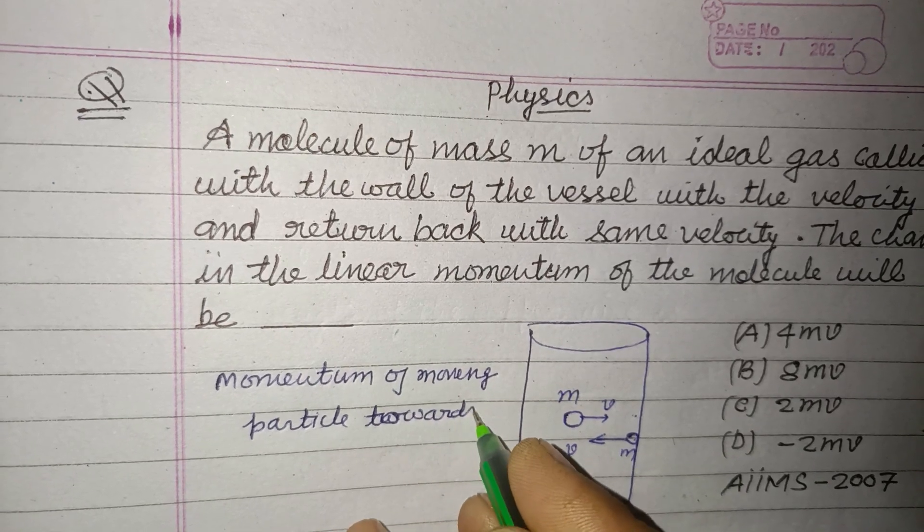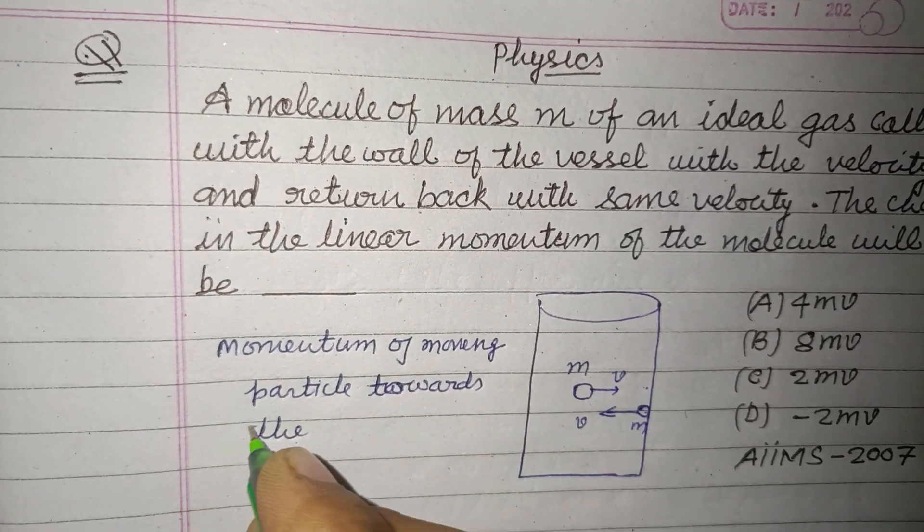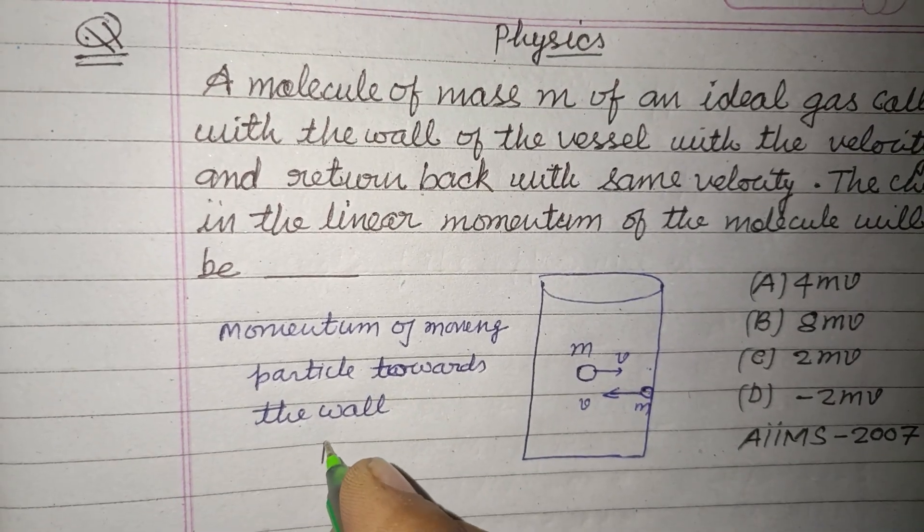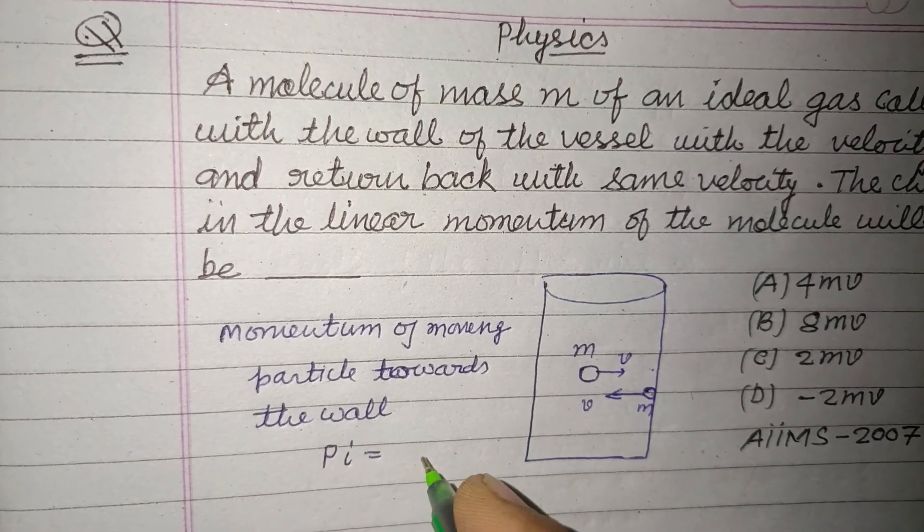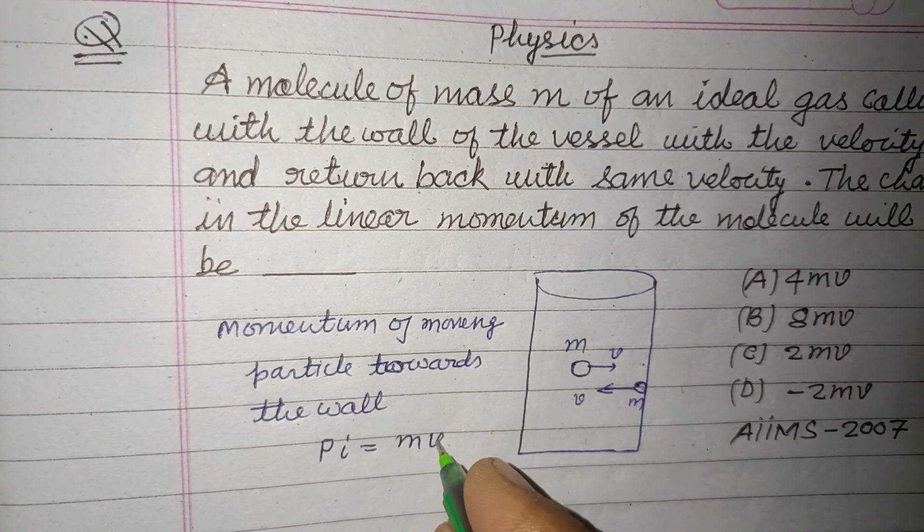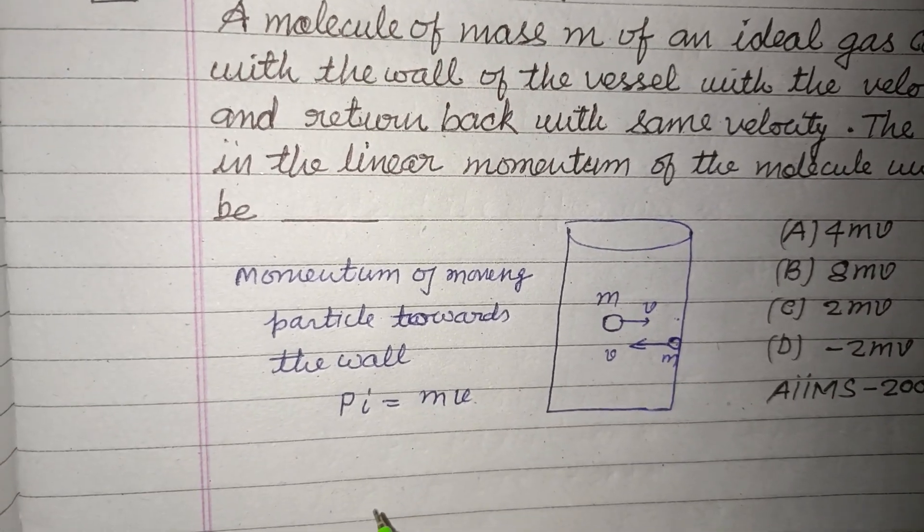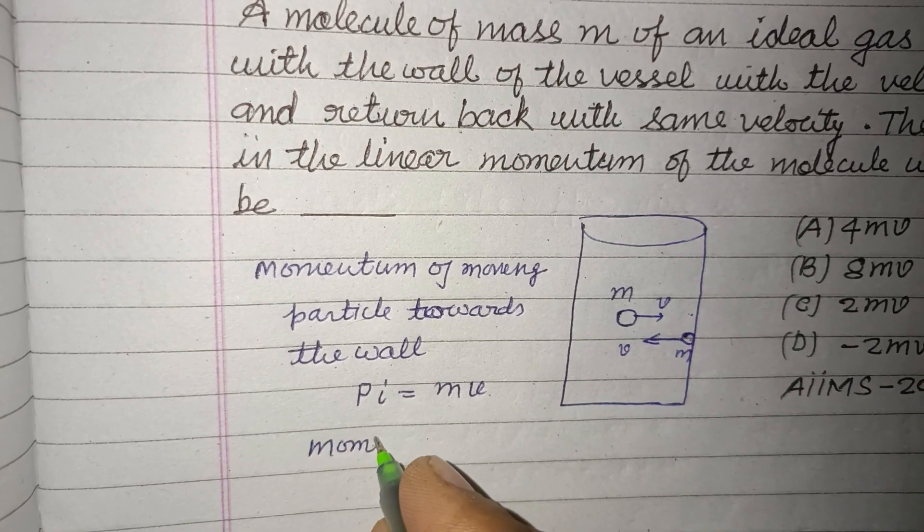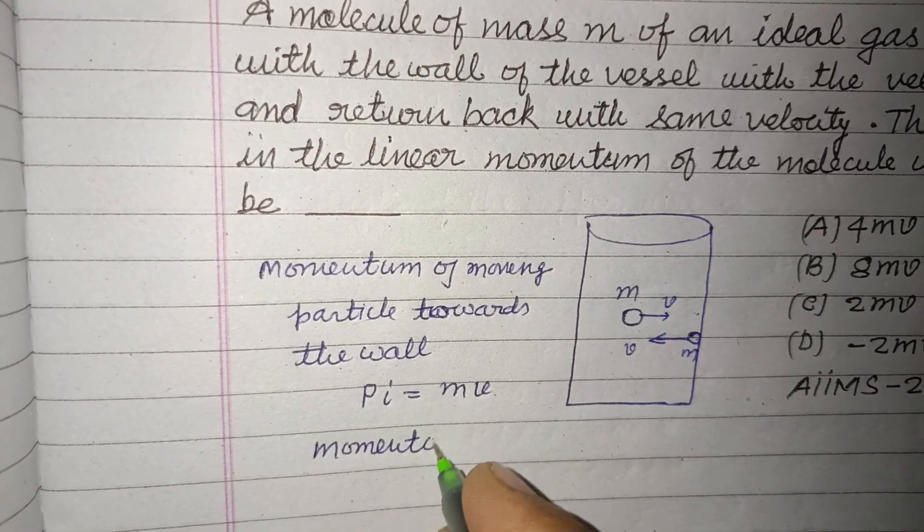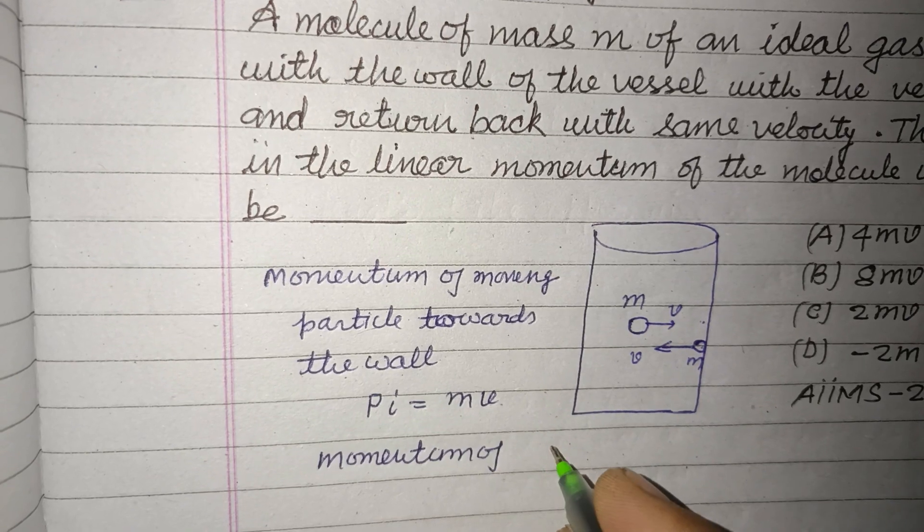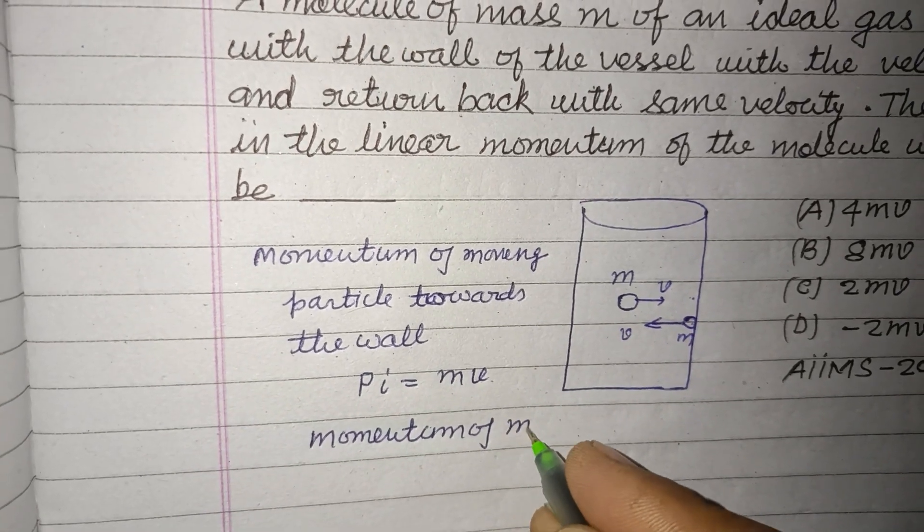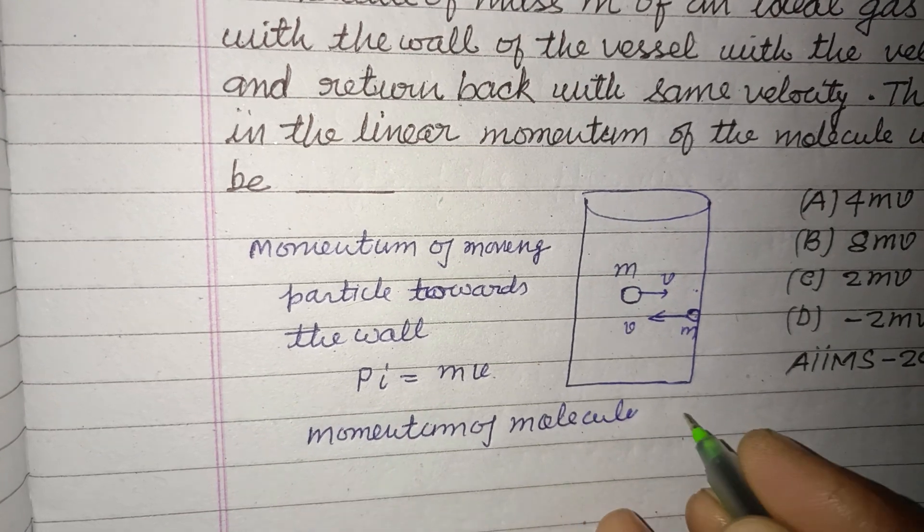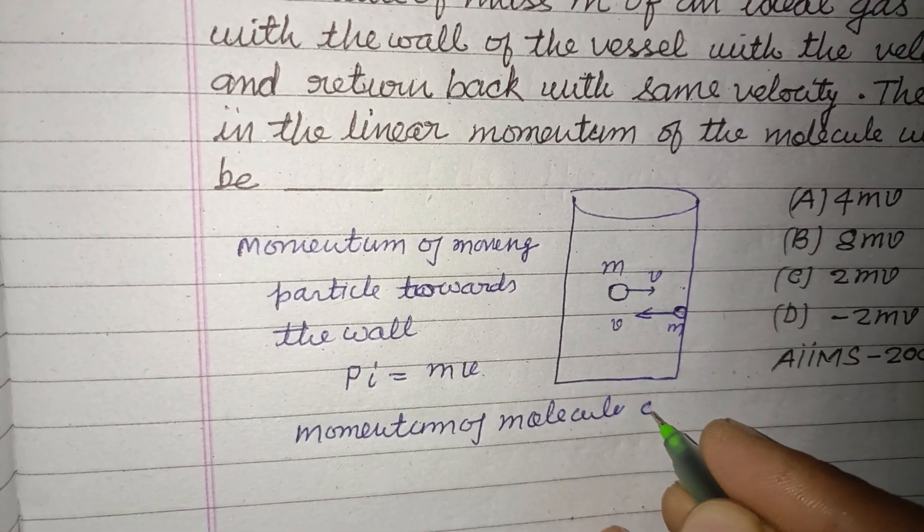This is Pi, initial momentum equals mass into velocity, m times v. Now momentum of molecule, or we say particle, coming back...